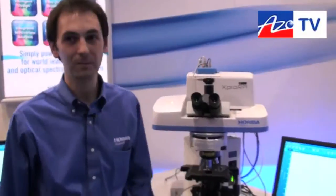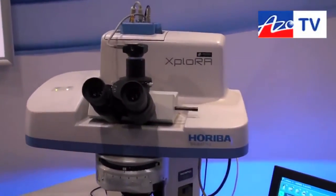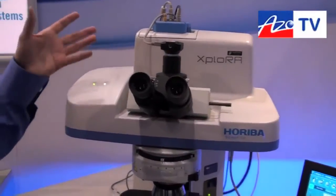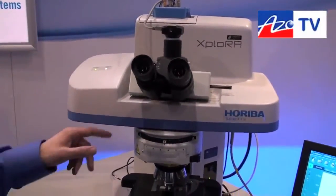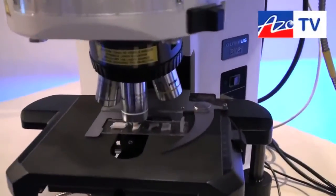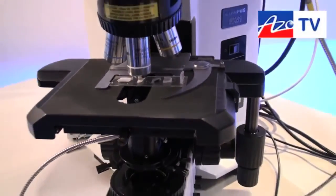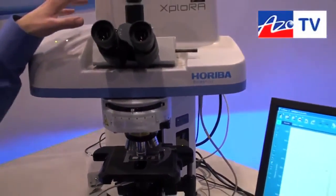This is the Explorer Raman spectrometer. Basically, this spectrometer is equipped with a laser that's going to be sent to the sample thanks to the microscope. We're going to focus the laser light on the sample and produce the Raman signal that we're going to analyze in the instrument.